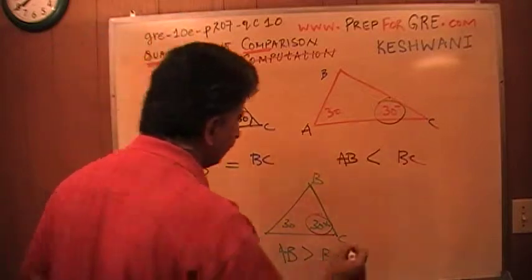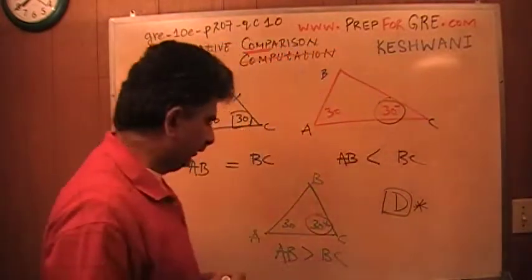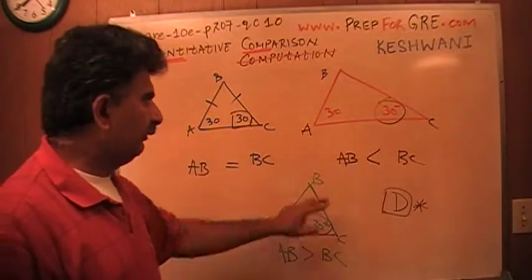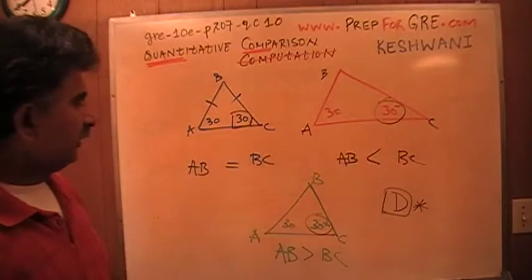The correct answer here is D. It cannot be determined. So it depends on this angle. If this is less than 30, this is more than 30, this is equal to 30, it changes.